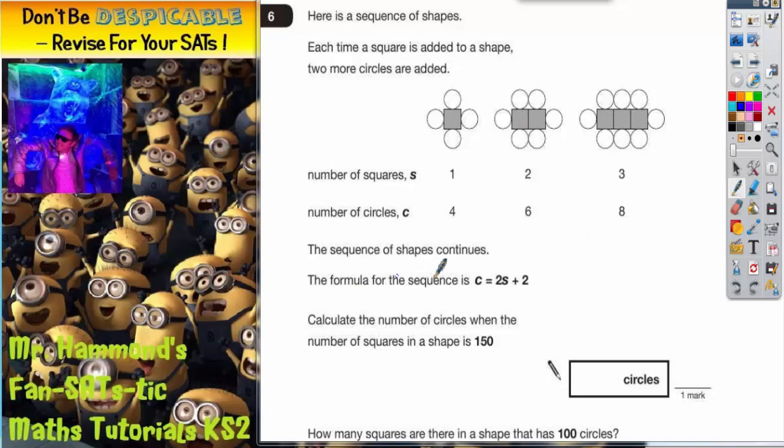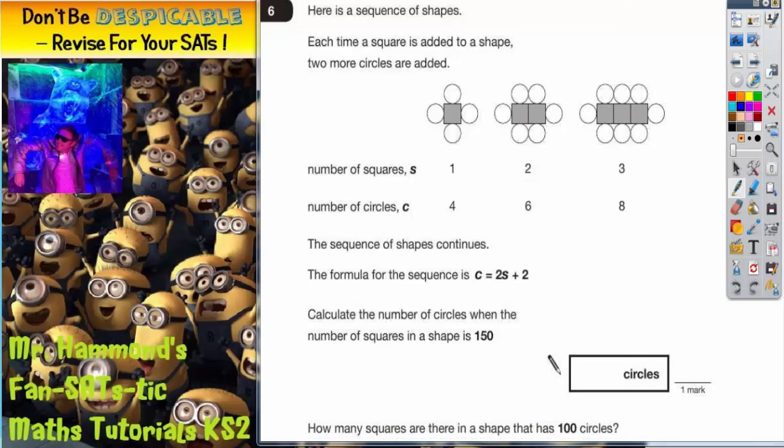It says the sequence of shapes continues. The formula for the sequence is circles equals two lots of the squares add two. Now there is another way of writing that.